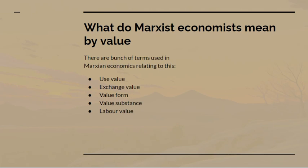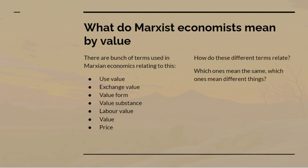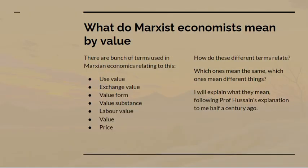So what do Marxists mean by value? There's a bunch of terms that Marxist economists use relating to this: use value, exchange value, value form, value substance, labour value, value itself, and price. How do these terms relate to one another? Which ones mean the same thing and which mean different things? Which are subsets and which are supersets of one another? I'm going to explain in this video what I understand them to mean, closely following the explanation that Professor Hussain gave me — now almost half a century ago.